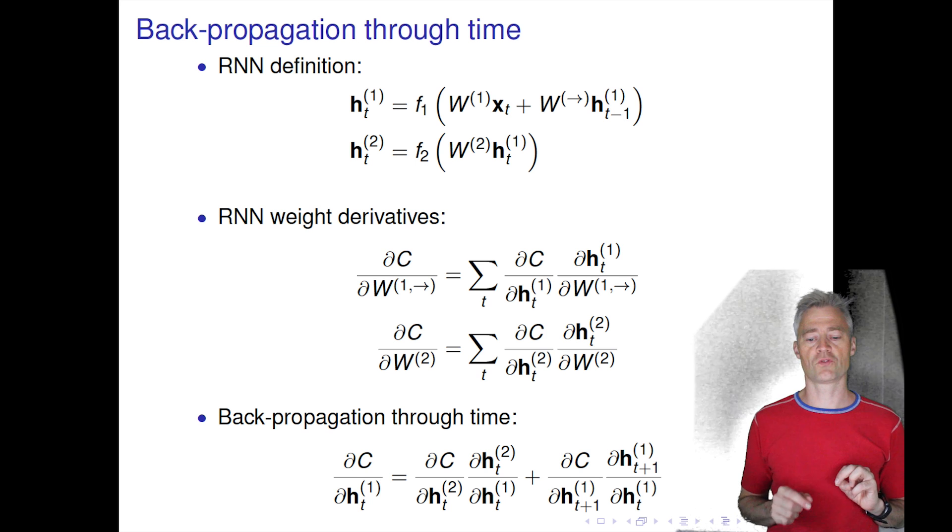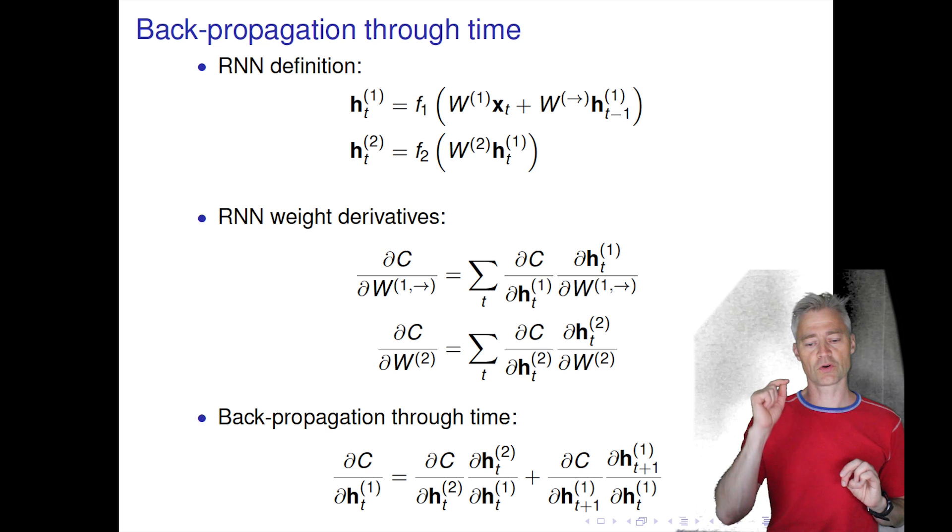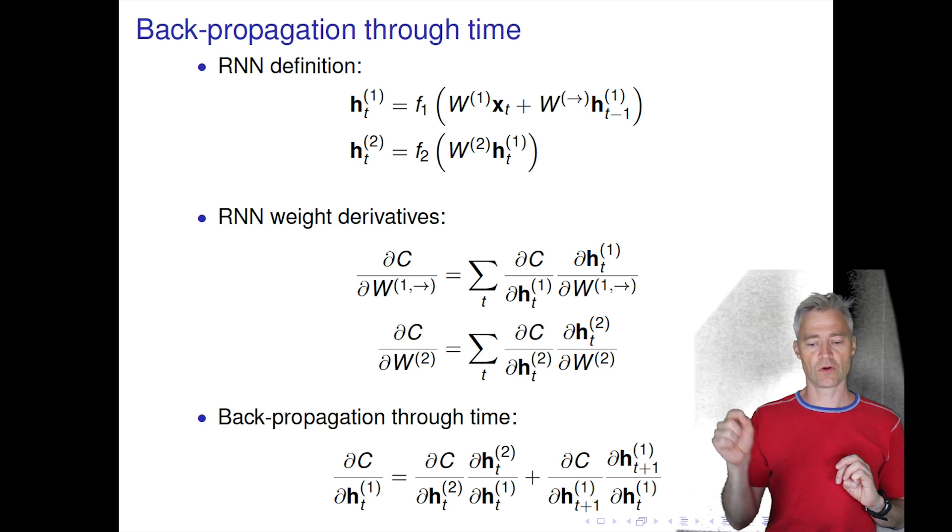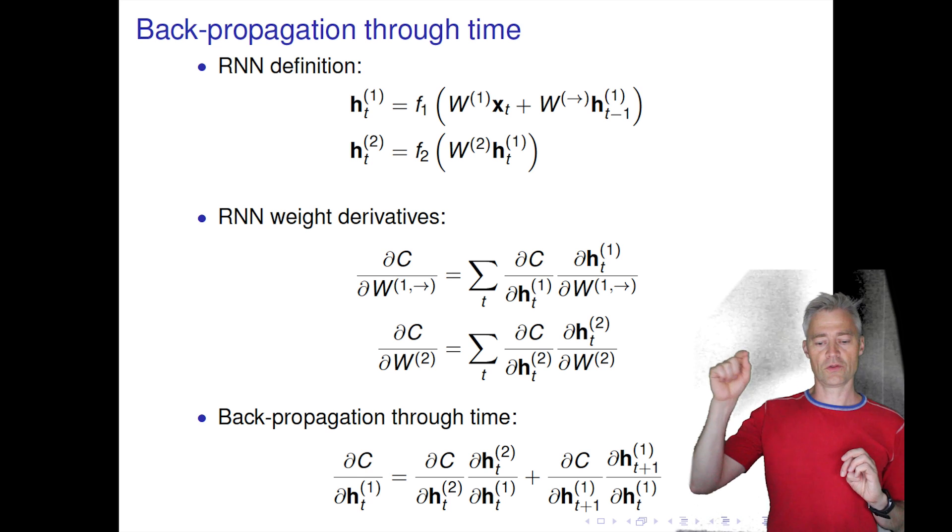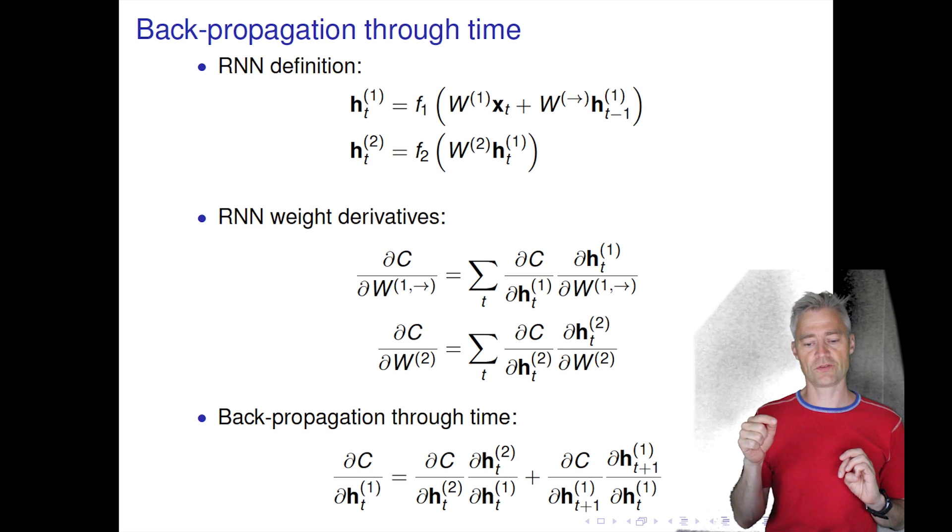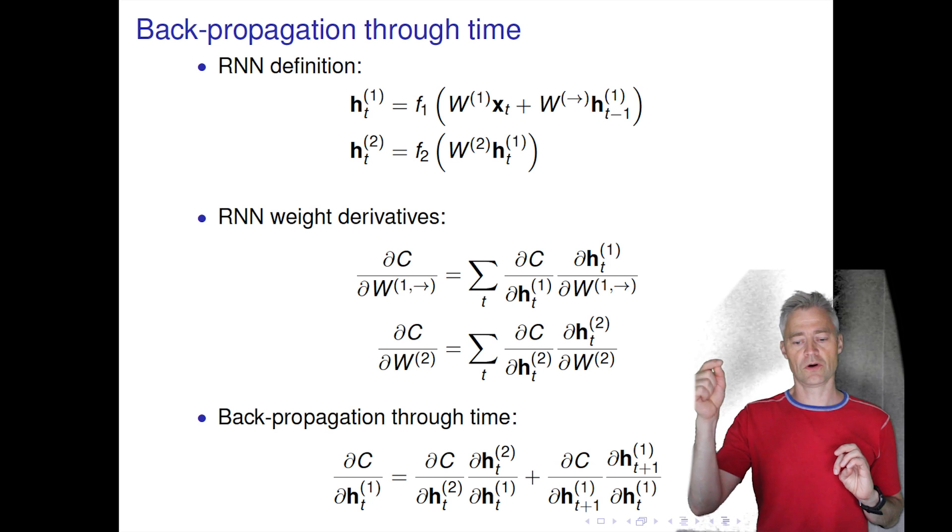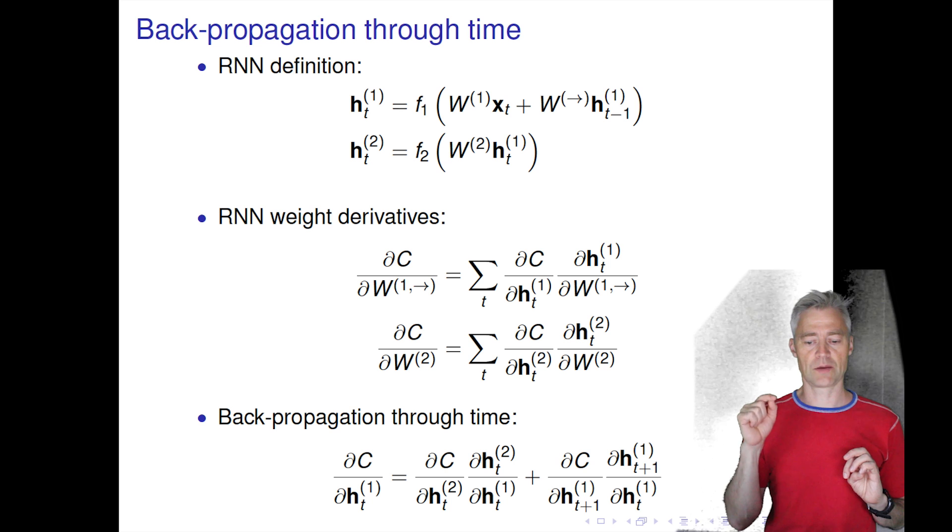The second term we actually have to calculate derivatives across time, because our cost function also depends on the activation of the network in the future, and the future activation depends on the activation at time now.